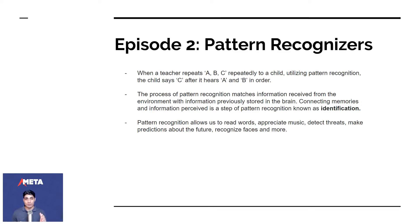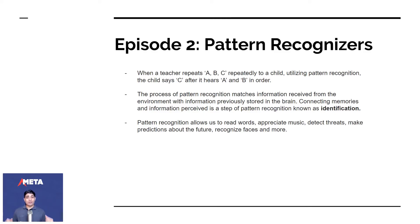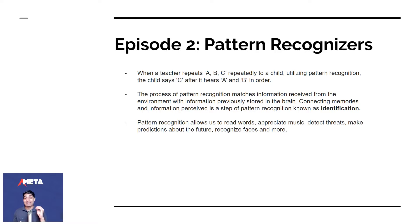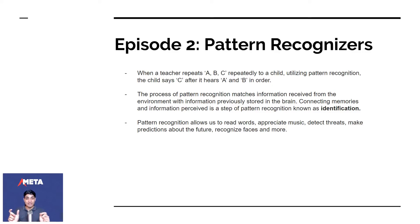The first thing you need to understand about pattern recognition is that you've been doing it since you were a child. When a teacher repeats A, B, and C repeatedly to a child, the child says C after it hears A and B in order. The process of pattern recognition matches information received from the environment with information previously stored in the brain. Connecting memories and information perceived is a step of pattern recognition known as identification. The minute you see a cat and somebody tells you that's a cat, you create this matched pattern of cat and the word CAT — that's what language is about.